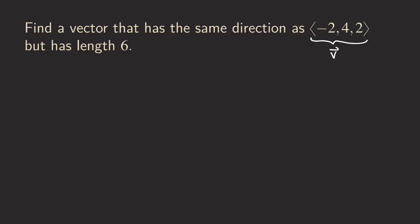So we can call this vector v. Then what we do is find the unit vector that is pointing in the same direction as v. The way to do it is to simply take v and multiply by the reciprocal of its magnitude. So we call this u, and it would be one over the magnitude of v, multiplied by v.